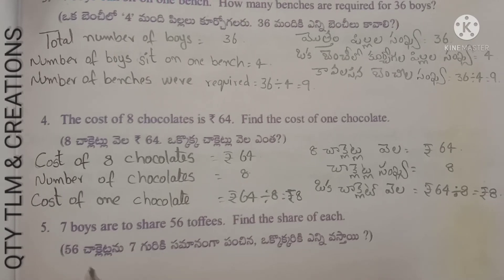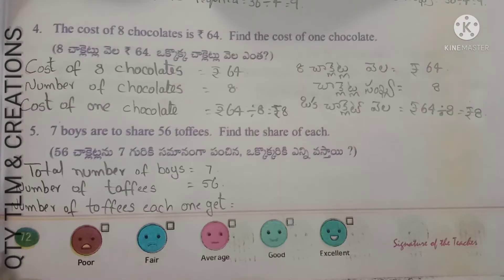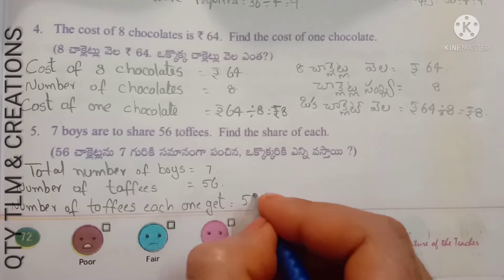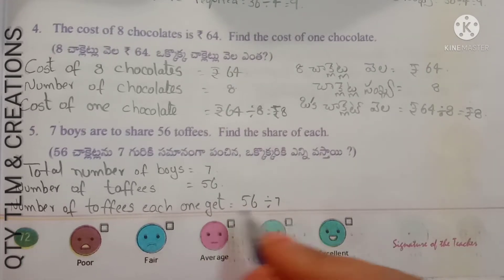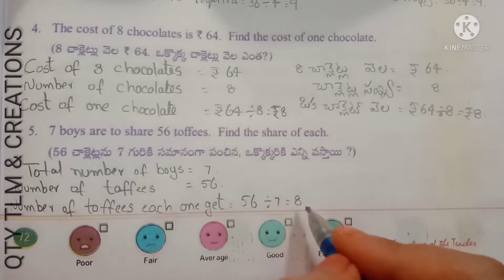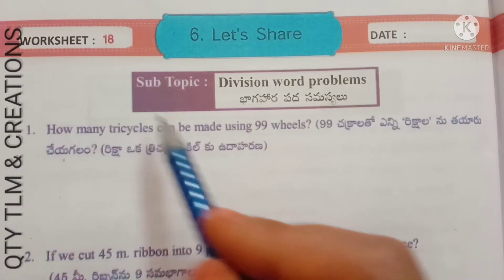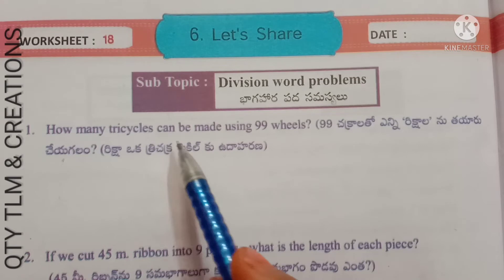Next question: 7 boys are to share 56 toffees. Find the share of each boy. Total toffees = 56. Number of boys = 7. Number of toffees each one gets = 56 divided by 7 = 8 toffees each.